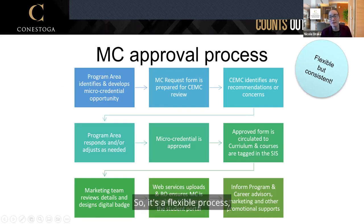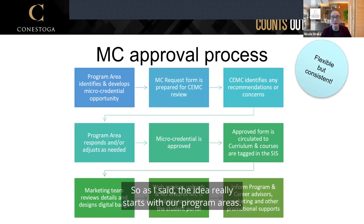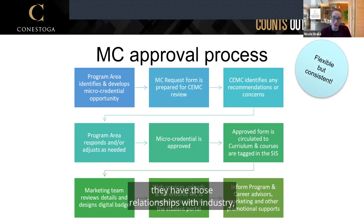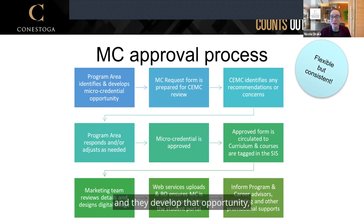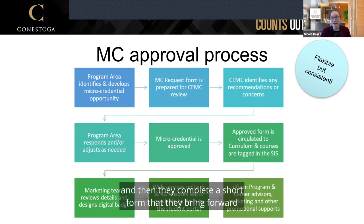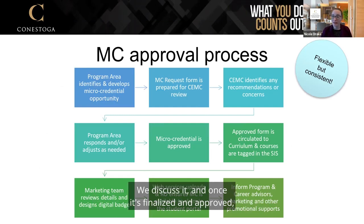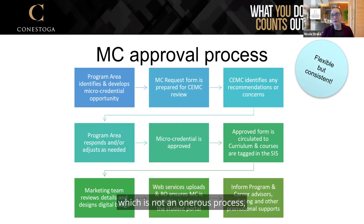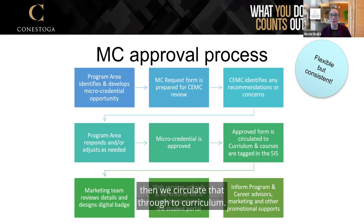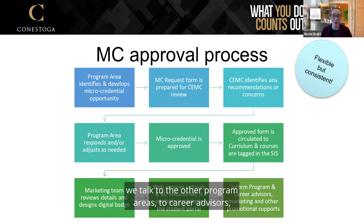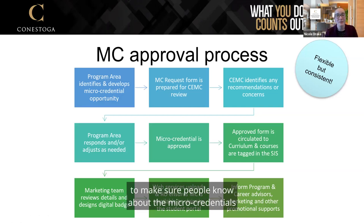It's a flexible but consistent process. The idea really starts with our program areas — they identify the need, know the subject matter experts, have industry relationships, and develop the opportunity. They complete a short form that comes forward to the CE Management Committee for review. Once finalized and approved — which is not an onerous process — we circulate it to curriculum, get it into our student information system, and then communicate to other program areas, career advisors, marketing, and promotional supports so people know about the micro-credentials we've developed.